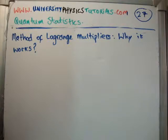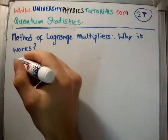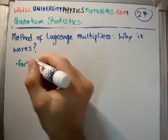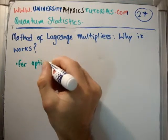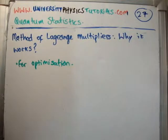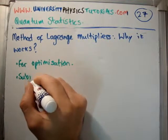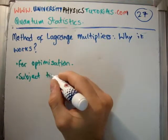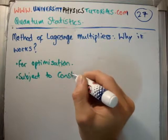So, what is the method of Lagrange multipliers? What's it for? Well, it's for optimization, so trying to get maxima or minima, but it's subject to constraints.